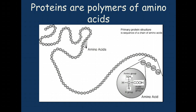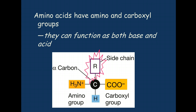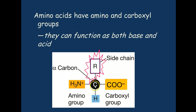So we need to take a look at amino acids. Amino acids are called amino acids because they have amino groups, which you see right here, and carboxyl groups over here — this is the acid part of it. So they function as both a base and an acid. The other two things attached to this central carbon are a hydrogen and then the side chain, which is what's different between amino acids. They're all attached to this alpha carbon right here.